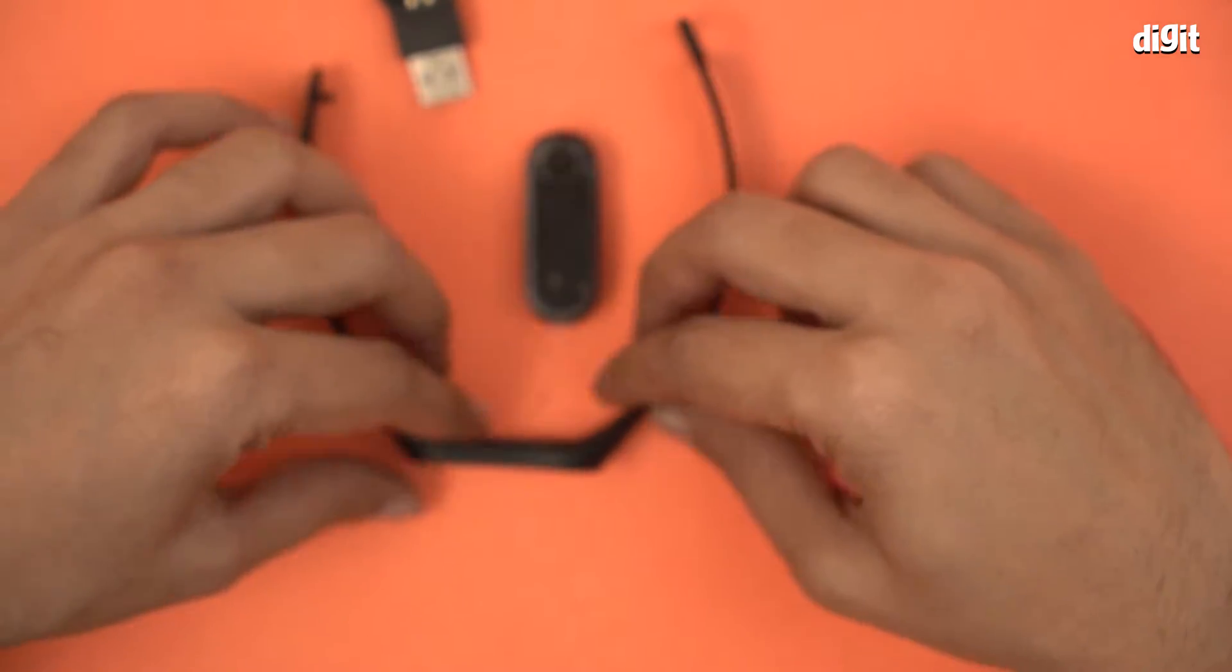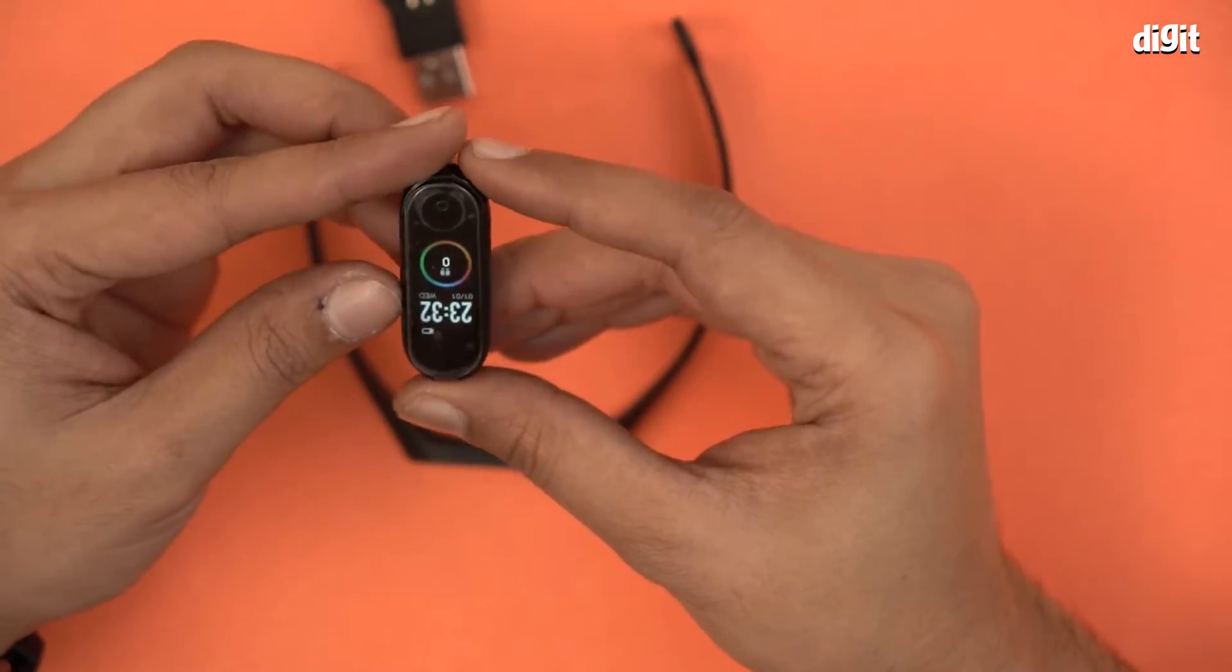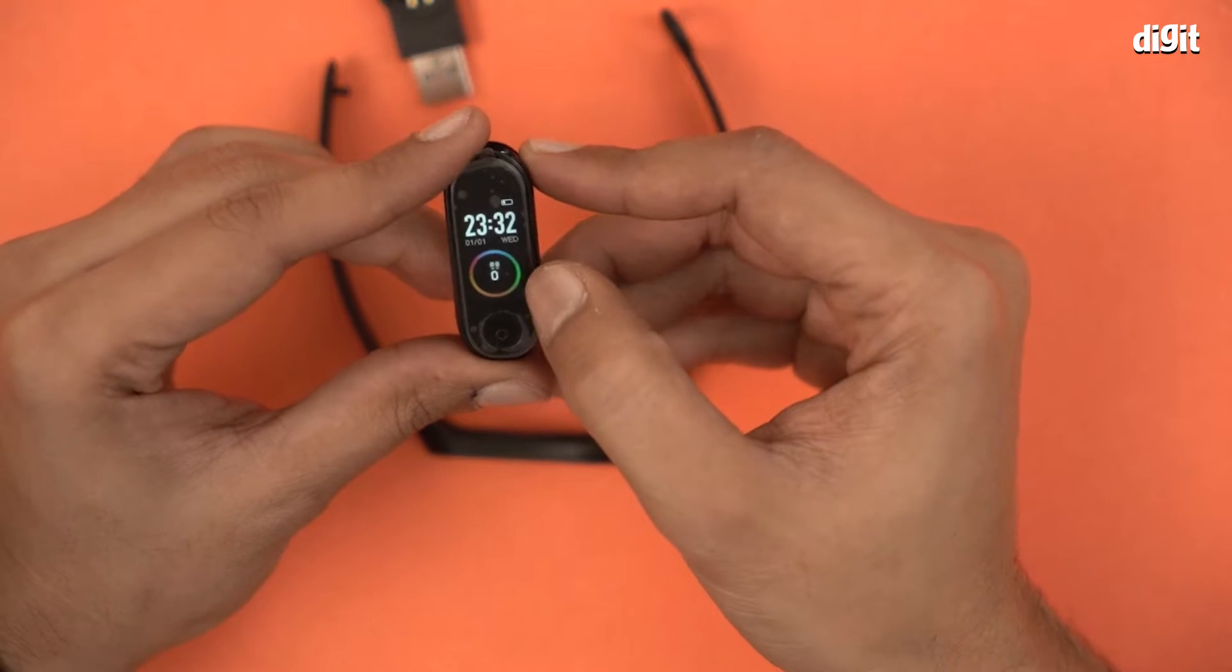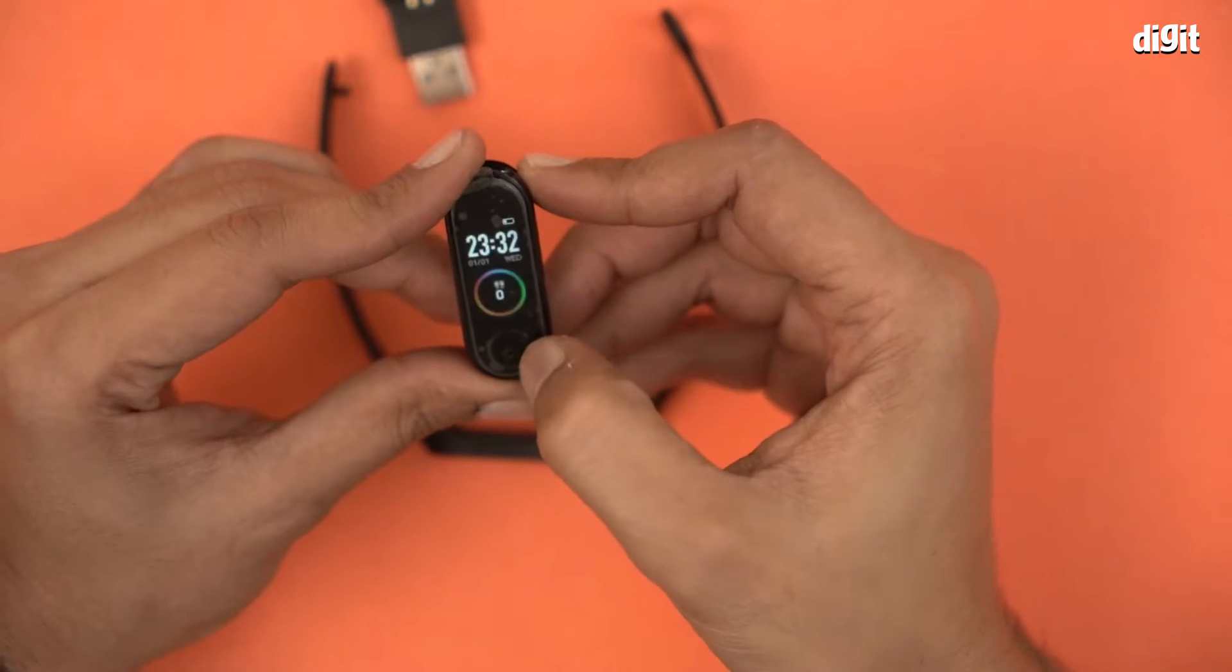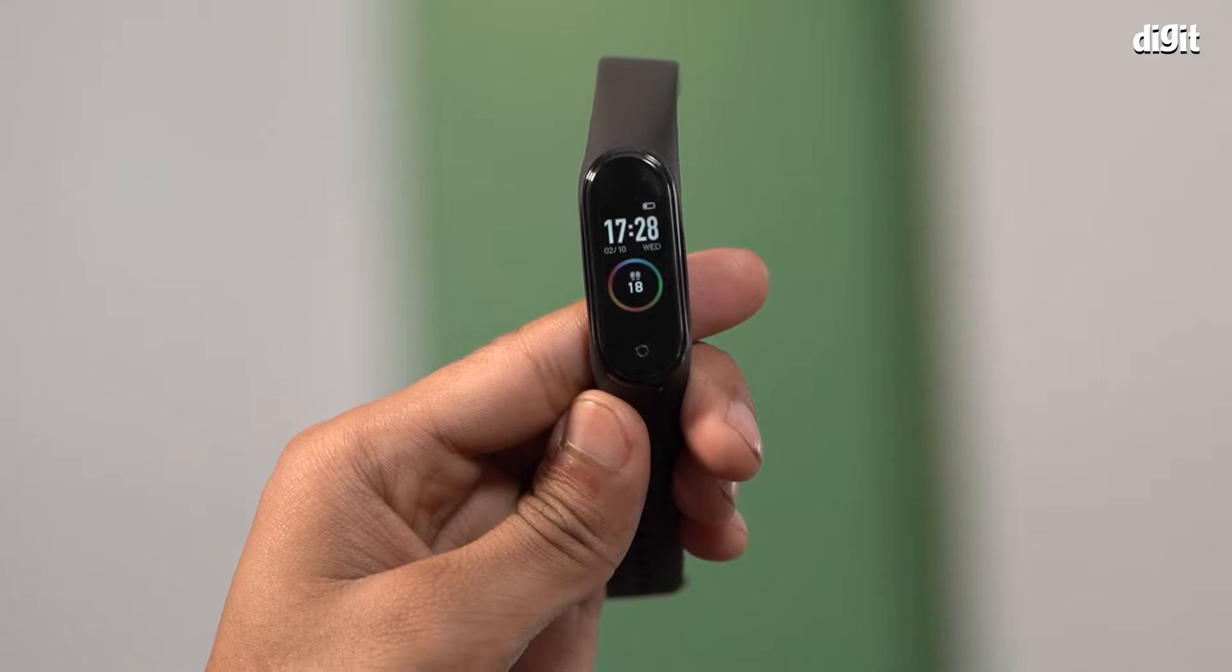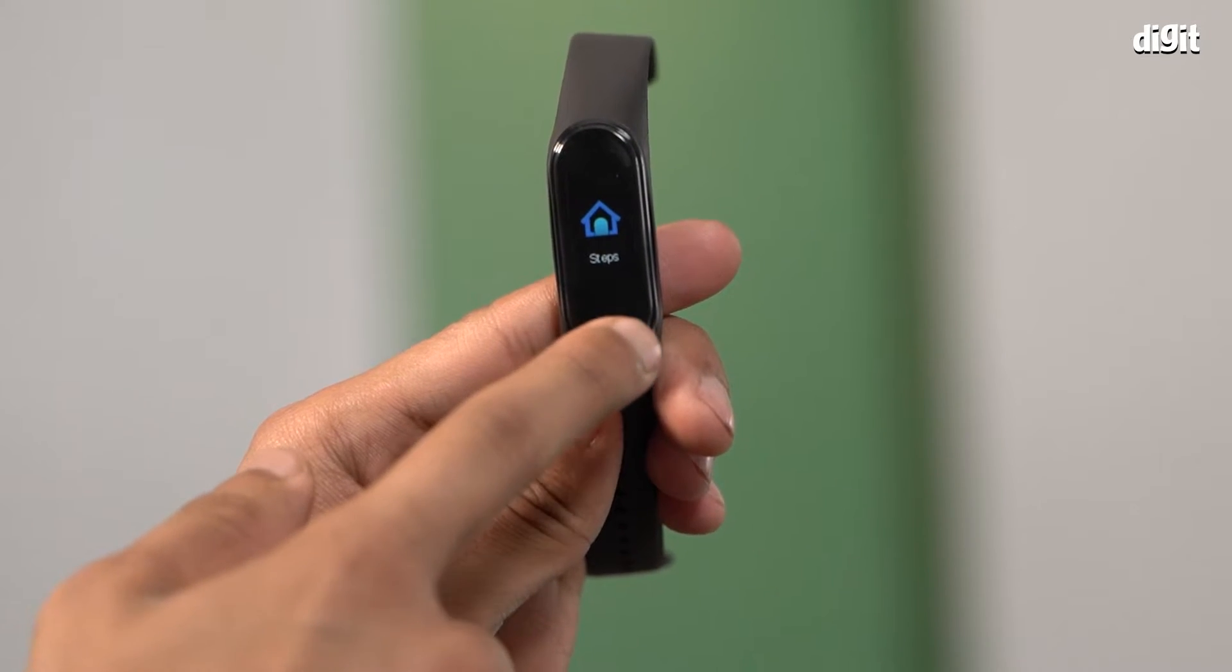Then we have the smartwatch itself. This is pretty small; 0.96 inches is not much. You can see the display is already on, and you can change it by pressing this button to go through all the different settings.